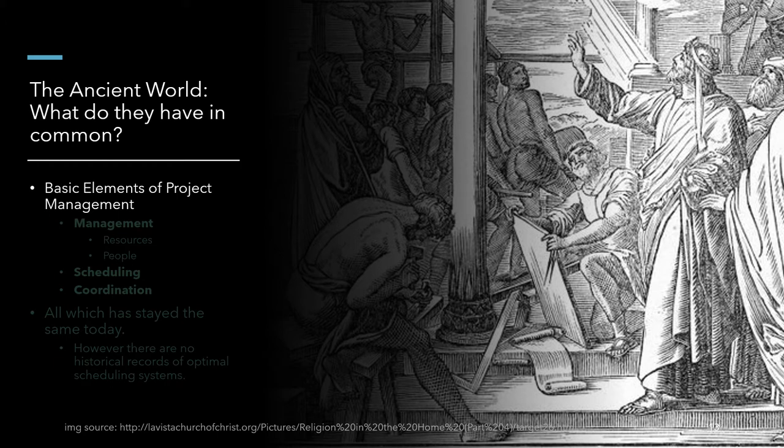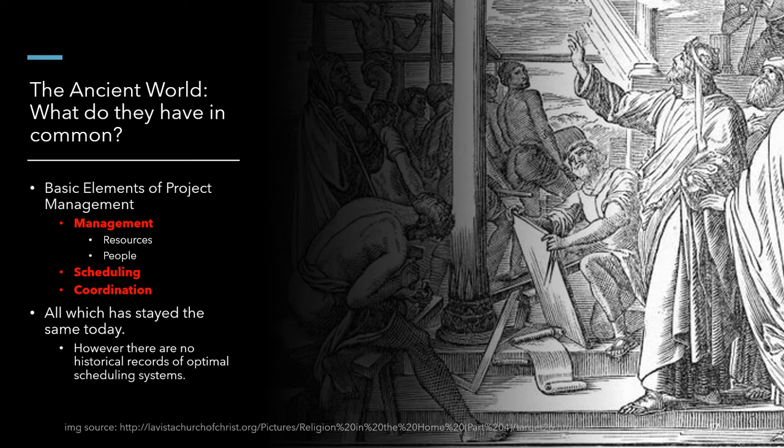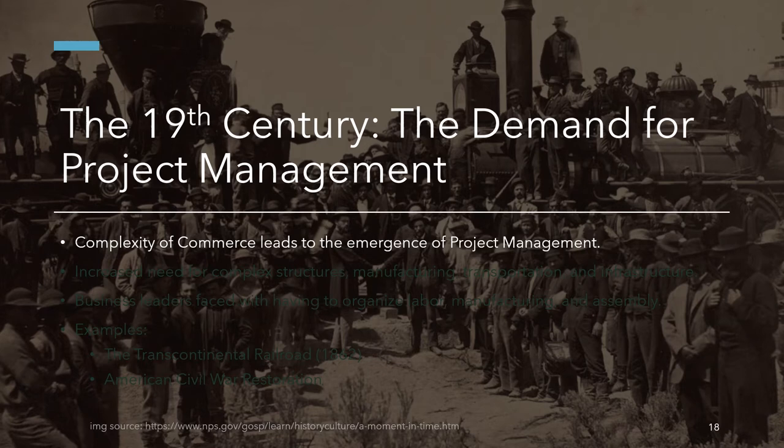Now let us examine the basic elements of ancient project management. First, we have the management of people and resources, scheduling tasks such as when the shipment of goods would arrive, and the coordination of tasks and people working on the project. All these elements are still prevalent and relevant to modern project management. However, it's unfortunate that there are no historical records or documentation on how these projects were precisely handled.